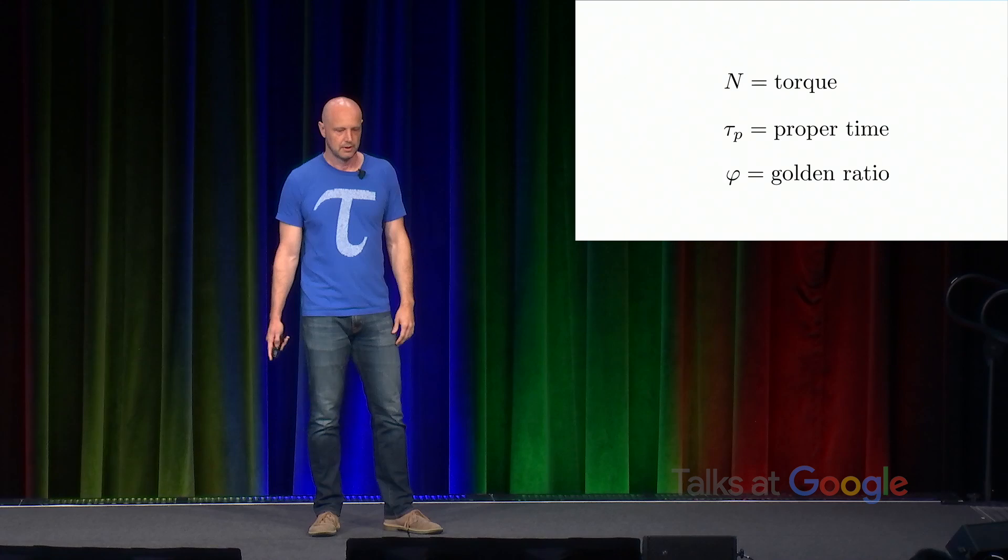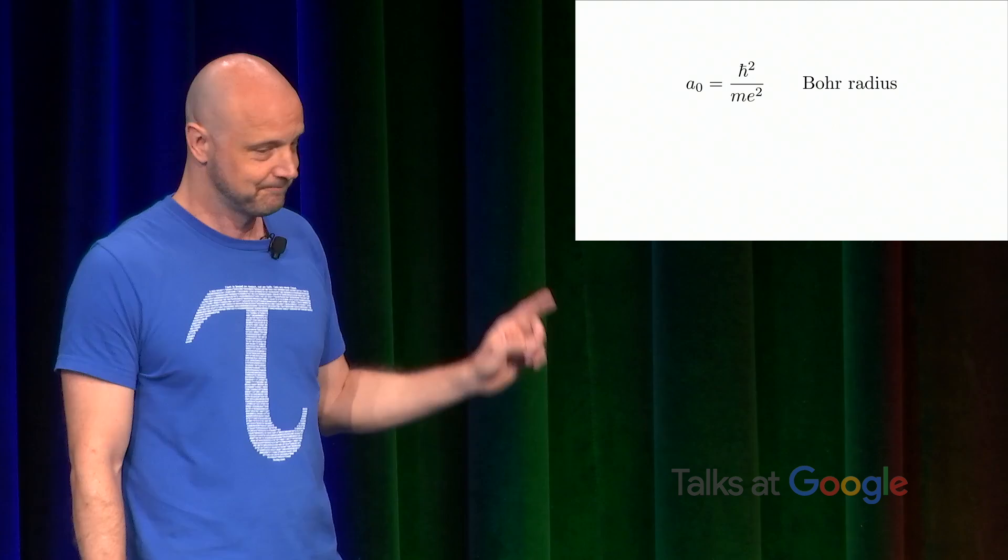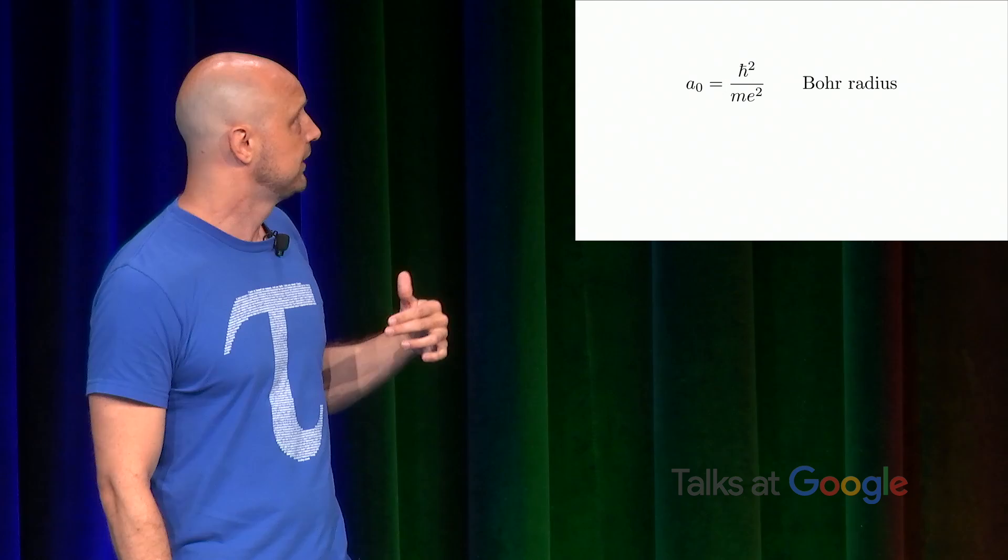This is a naught, the Bohr radius. By the way, note that that's the Bohr radius, not the Bohr diameter. And it's a combination of fundamental constants, h bar squared over m e squared. H bar is Planck's constant divided by 2 pi. That's right. M is the mass of an electron, and e is its charge.